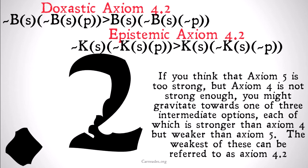If you think that axiom 5 is too strong, but axiom 4 is not strong enough, you might gravitate towards one of the next three axioms we're going to offer in this video and the two to follow. Each of the axioms in progression is going to be stronger than axiom 4, but weaker than axiom 5. The weakest of these three axioms can be referred to as axiom 4.2.